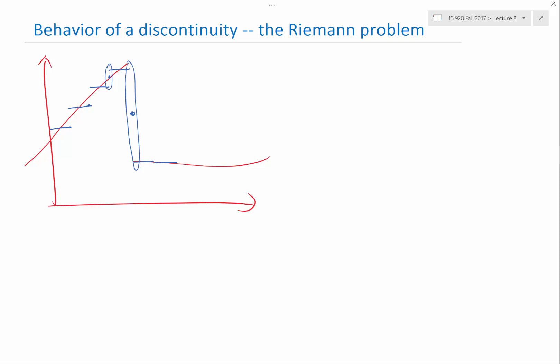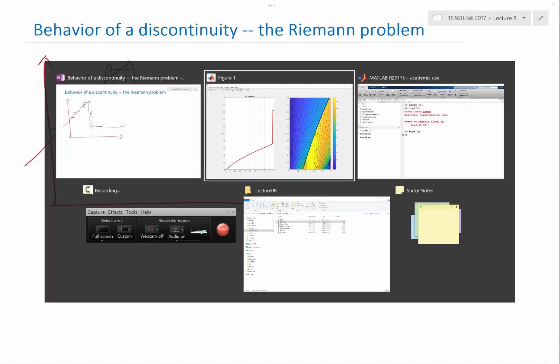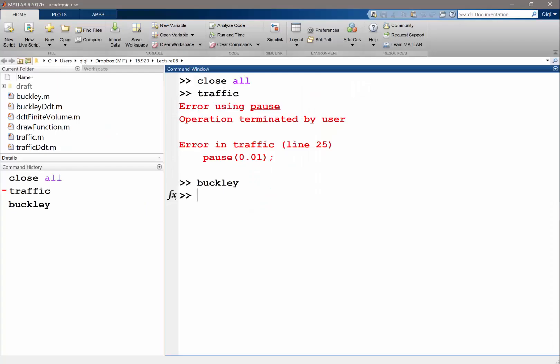We have also seen that if we upwind the scheme we get first order accuracy but we are doing well in shock waves and in last lecture I had a bug in the code.